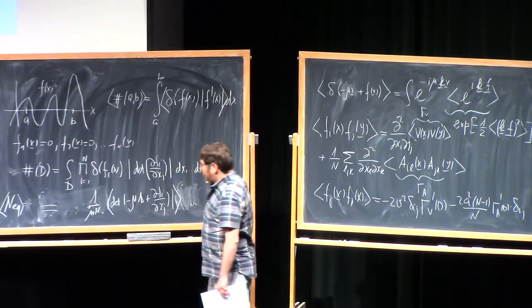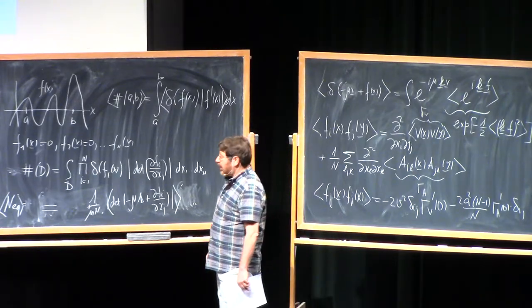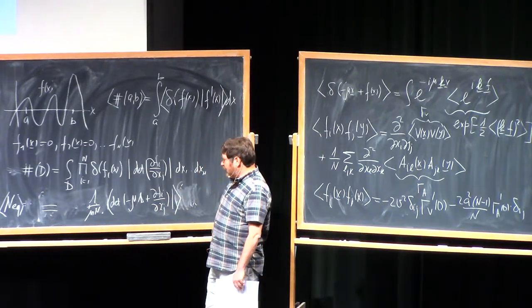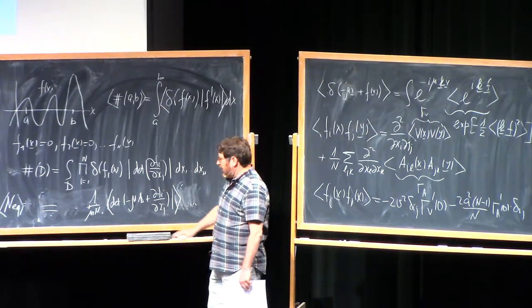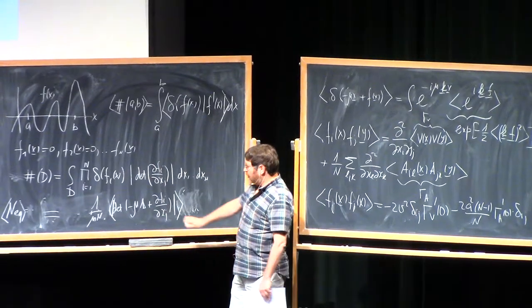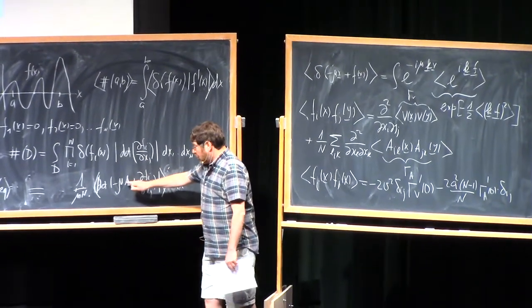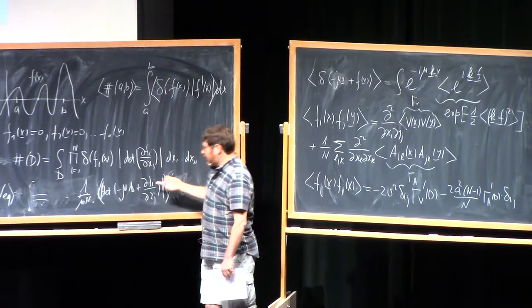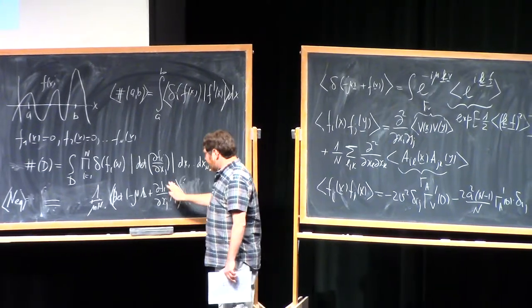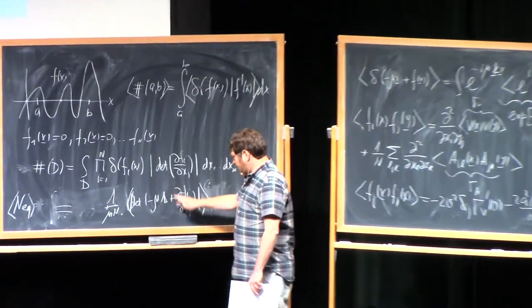We see that the problem of evaluating expected value - the problem of finding the mean value of numbers of equilibria for our dynamical system - is a purely random matrix problem. It's just a problem of finding expected value of the modulus, modulus is very important, of the determinant of random matrix. In fact, if you like, modulus of characteristic polynomial of this random matrix. It's a typical random matrix problem.